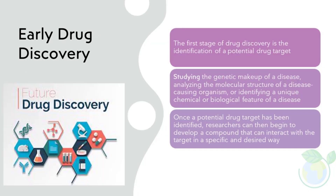Early drug discovery: The first stage is the identification of a potential drug target. This can be done through various methods, such as studying the genetic makeup of a disease, analyzing the molecular structure of a disease-causing organism, or identifying a unique chemical or biological feature of a disease. Once a potential drug target has been identified, researchers can then begin to develop a compound that can interact with the target in a specific and desired way.